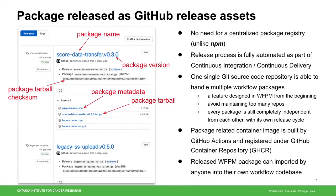WFPM packages are released as GitHub release assets, as shown in this screenshot. With this, there's no need for a centralized package registry. One single Git repository is able to handle multiple workflow packages, helping avoid maintaining a large number of repositories. Despite residing in the same repository, each package is still completely independent, with its own development and release cycle. A released package can be imported by anyone into their own workflow codebase.